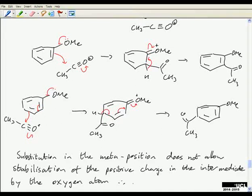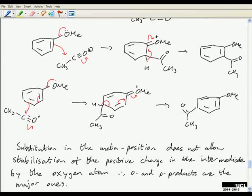You probably just want to say at the end there that substitution in the meta position does not allow stabilization of the positive charge onto the oxygen atom, and so the ortho and para products are the major products.